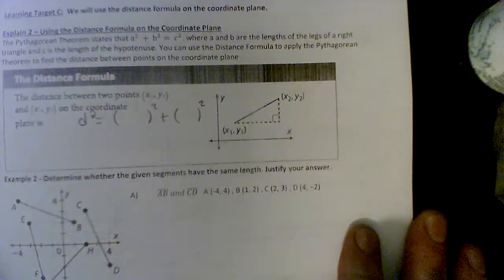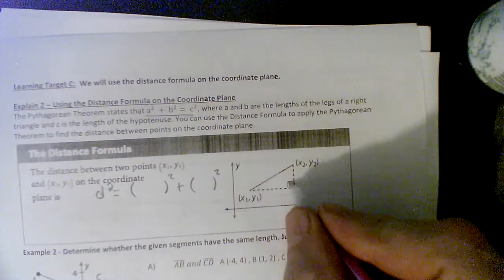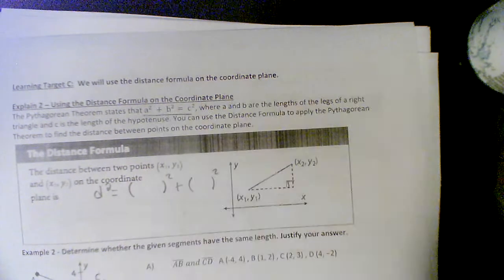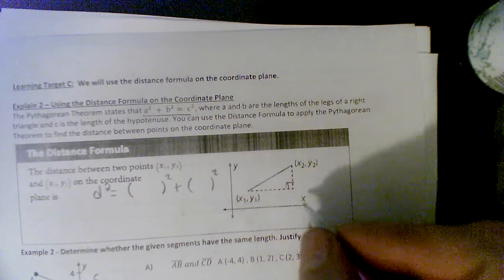Alright, so we got distance formula here. The distance formula is generally derived from something you guys are pretty familiar with, it's called Pythagorean theorem which works with right triangles, right? And it says a squared plus b squared is c squared. What if I wanted the distance from like A to B?